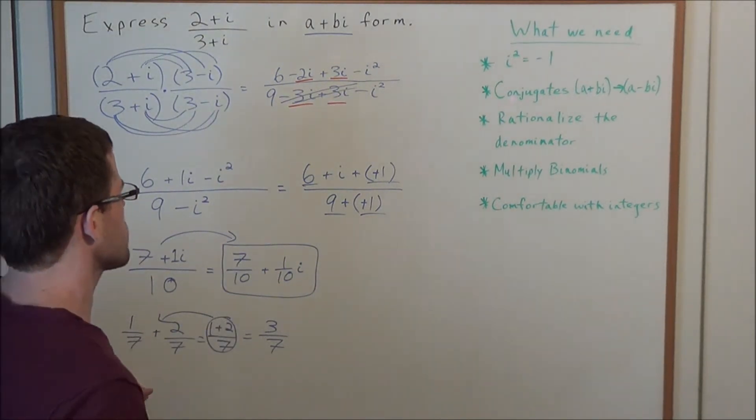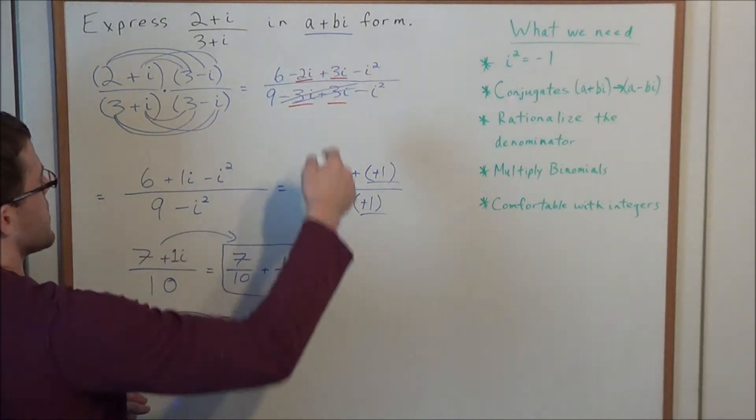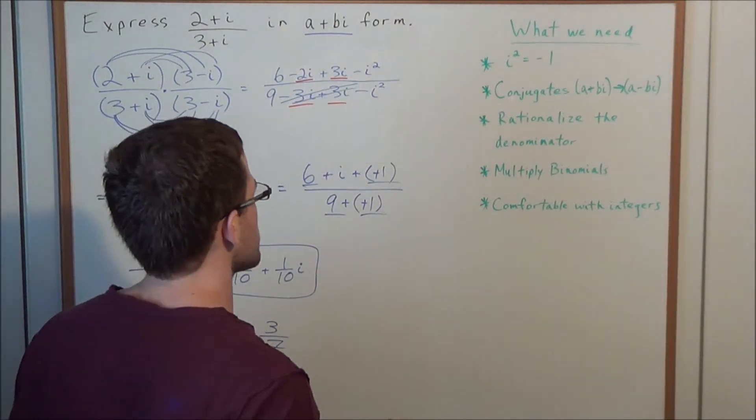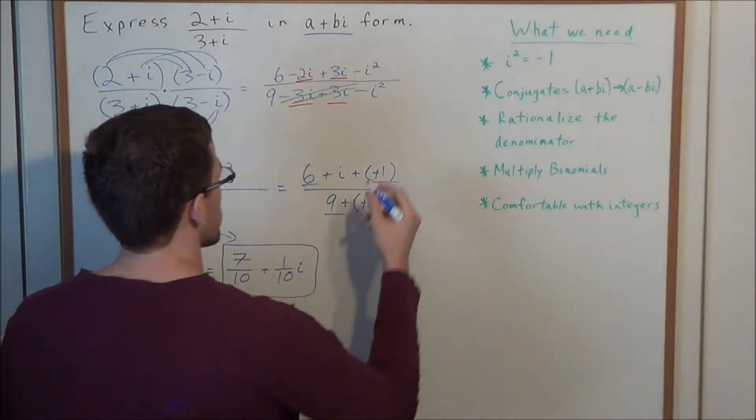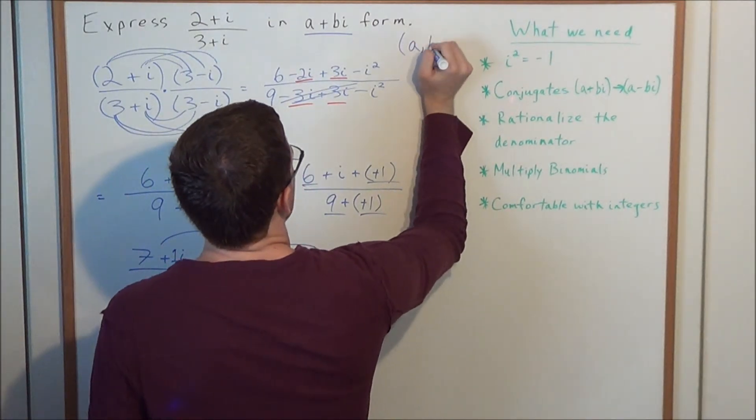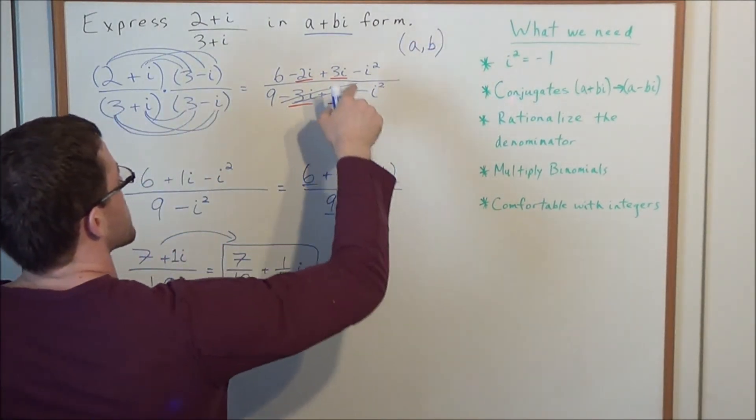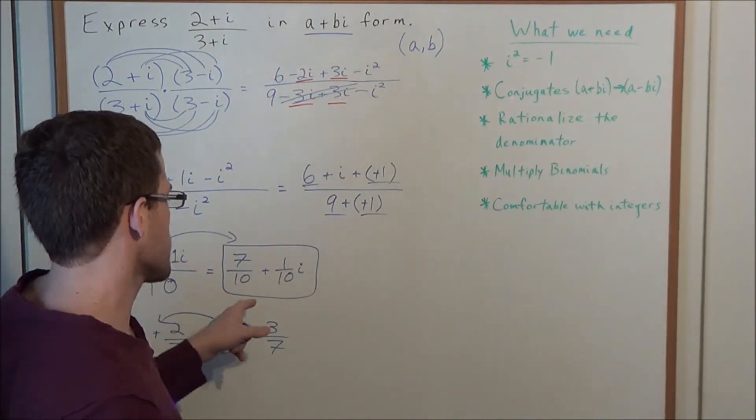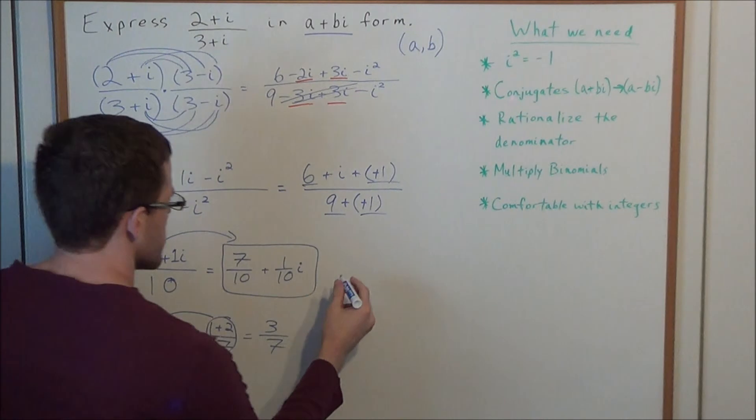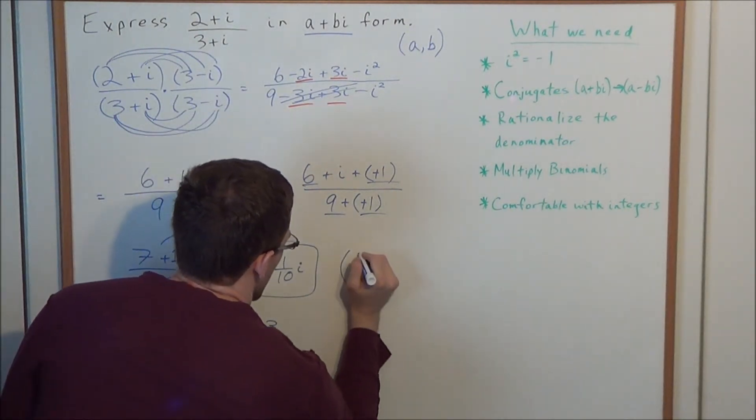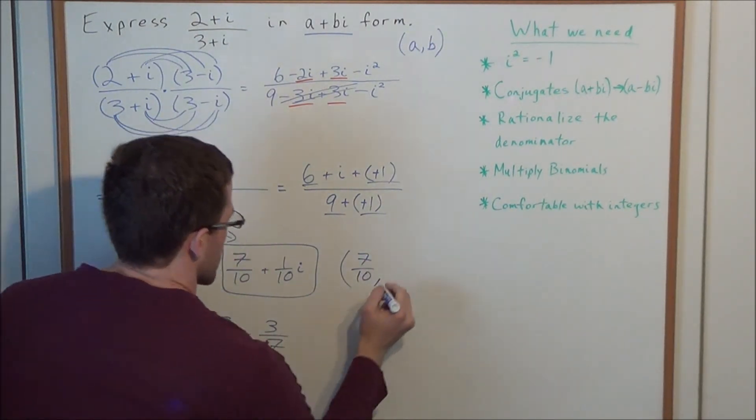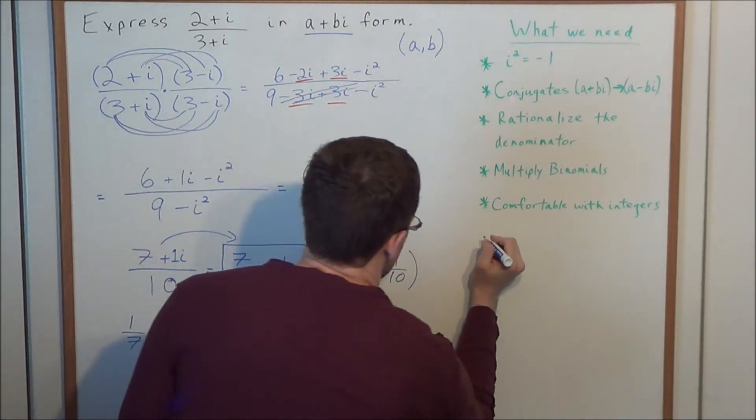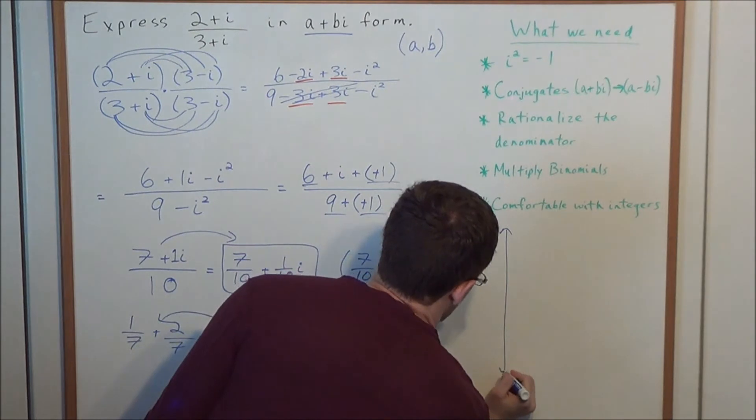And now the next question that a lot of students usually have is, why do we want it in a plus bi form? Well, the way that complex numbers are defined, they're defined to be a pair of real numbers, a, b, such that a plus bi would give us that complex number. So in some sense, this answer here would refer to the pair of coordinates 7 over 10 comma 1 over 10.